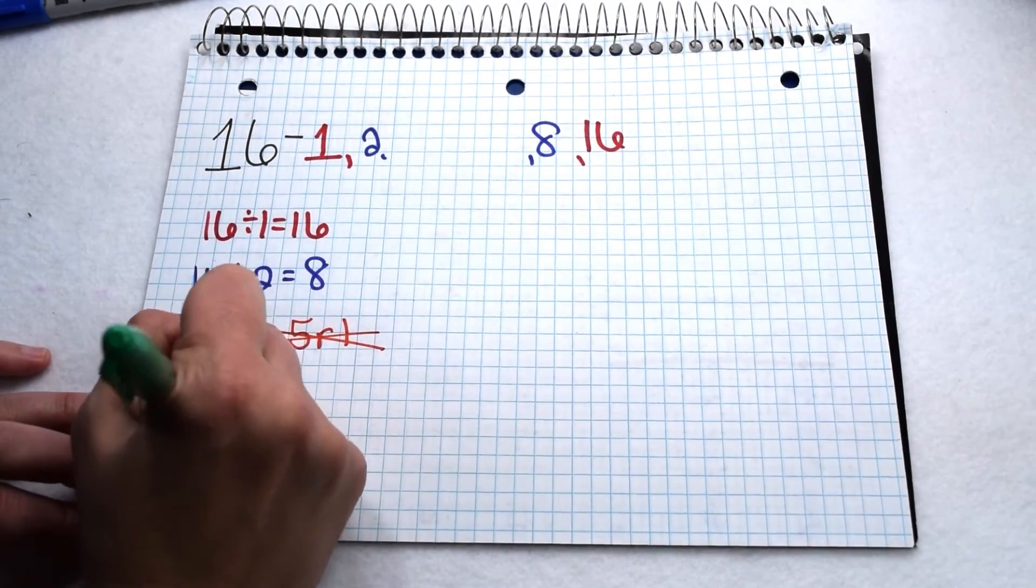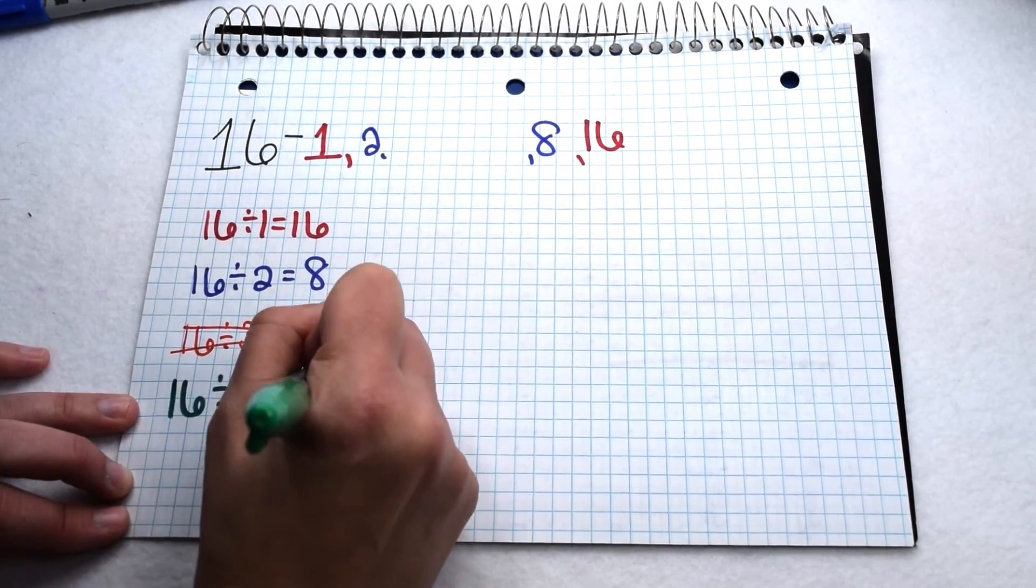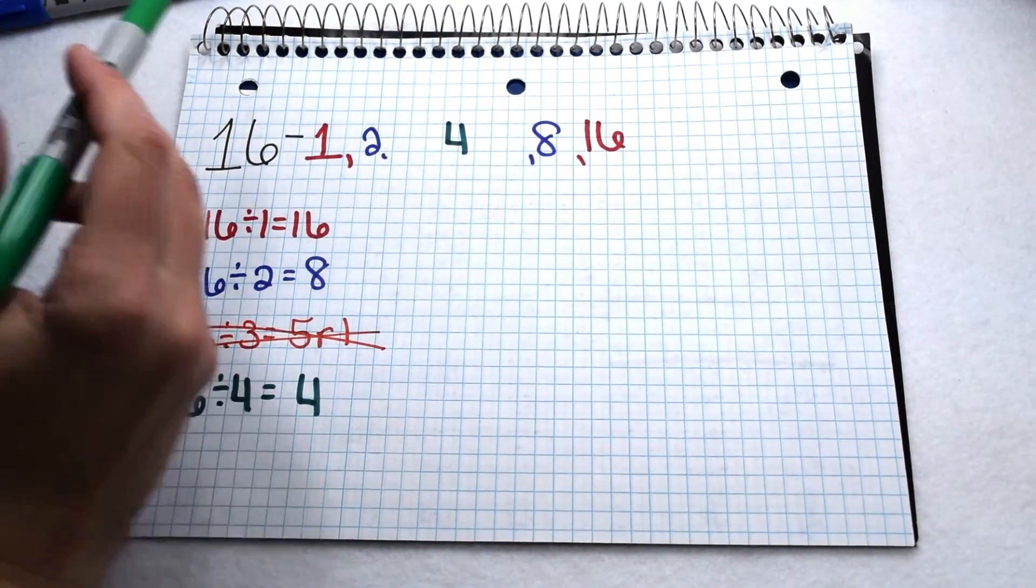So we can see that 16 looks like it should be divisible by 4 and when we check 16 divided by 4 is 4. Since our factors are starting to repeat we now know we have all the factors of 16.